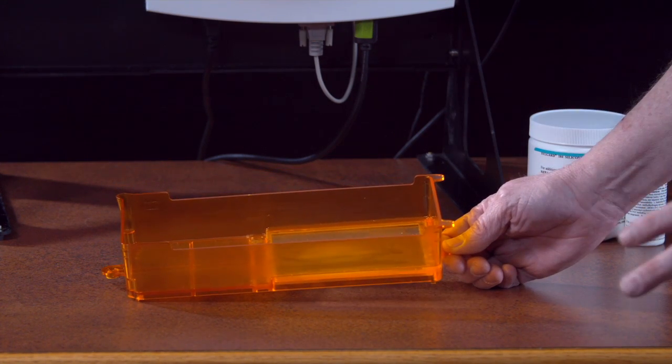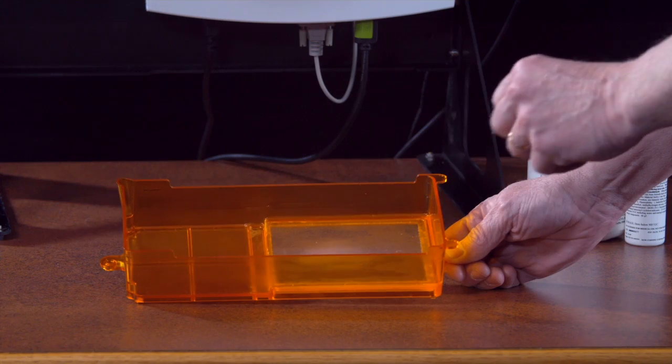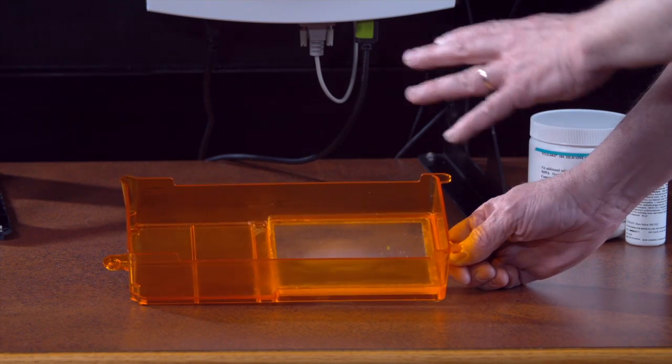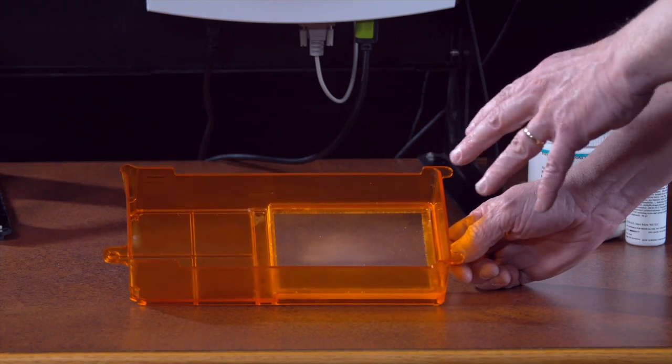First thing we want to do is clean it thoroughly. You can use paper towels, hot soapy water, even a little rubbing alcohol, but leave the PDMS in the vat while you're cleaning it.